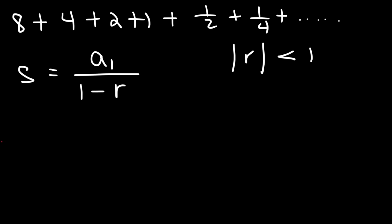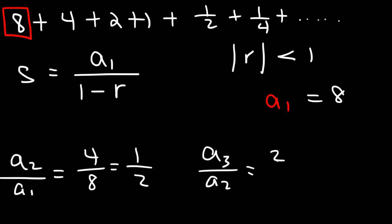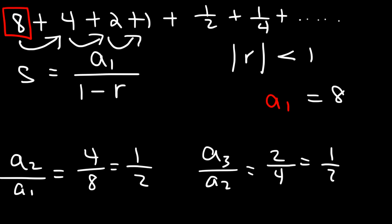So in this example, the first term is 8. To find the common ratio, take the second term and divide it by the first. So 4 divided by 8 is 1 half. To confirm it, take the third term and divide it by the second: 2 divided by 4 is 1 half. So to get the next term, you multiply by 1 half. 8 times 1 half is 4, 4 times 1 half is 2, 2 times 1 half is 1, and so forth.